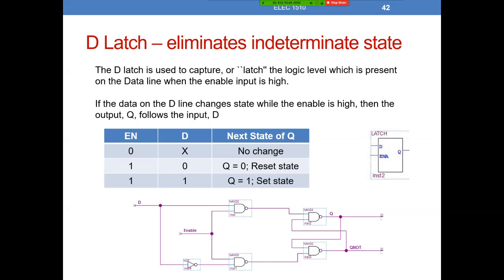The way we define this data latch behavior is whenever the enable is zero, we don't care what the data input is because there's going to be no change on the output Q. When the circuit's disabled, that's a zero. When it's enabled — when enable is a one — then when D is a zero, Q will be a zero, and we typically refer to that as the reset state. Whenever the output Q is a one, we refer to that as the set state. Whenever the enable is a one and D is a one, the output Q will be a one. The easy thing to remember about the data latch is the output Q will always be equal to whatever's on D as long as the circuit is enabled.